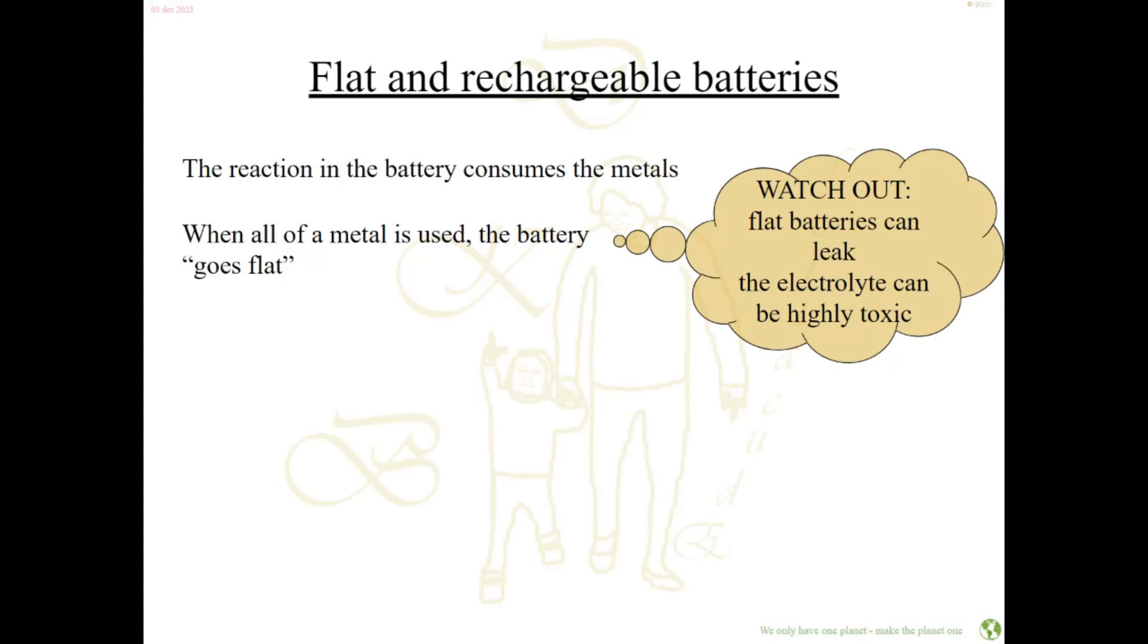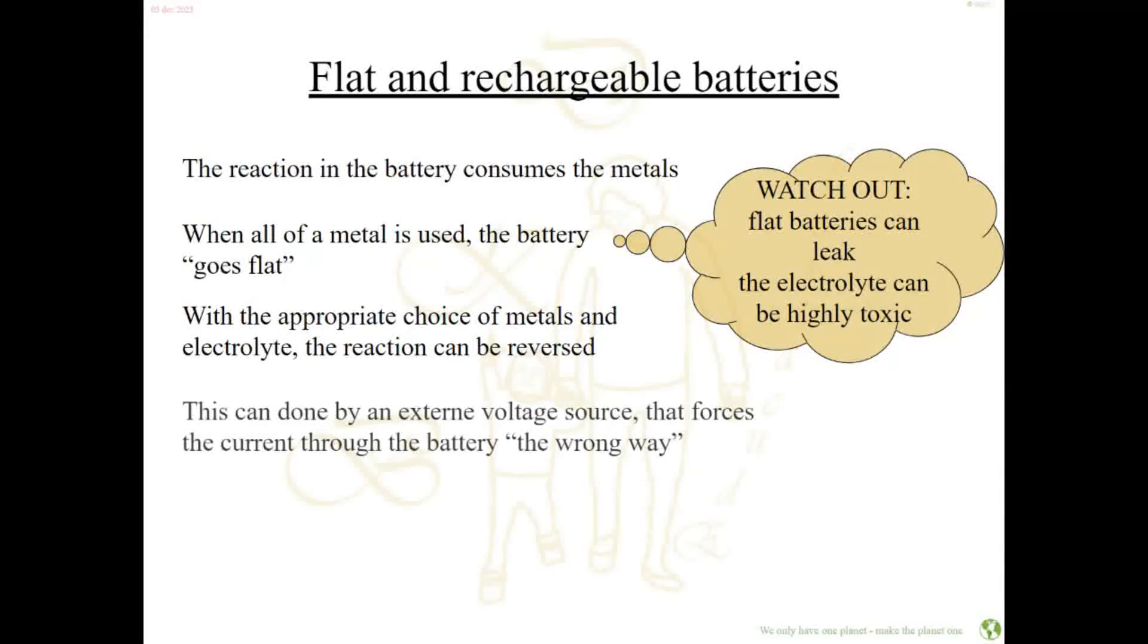Some time ago, long after they invented batteries, they found out that if you choose your metals appropriately and the correct electrolyte, you can actually reverse the reaction and regain the metal that you used. This can be done by using an external voltage source that forces the current to run through the battery the wrong way. Electrons were going from metal one to number two, but now you force the electrons to go back from metal two to metal one.